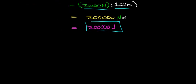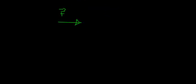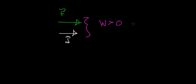Notice from this problem that the force vector and the displacement vector pointed in the same direction. When the force acts in the same direction that the object is displaced, the work is going to be greater than zero — we say the force does positive work on the object. When you do positive work on an object, you increase its velocity, and as we'll soon discover, you also increase the kinetic energy of the object.